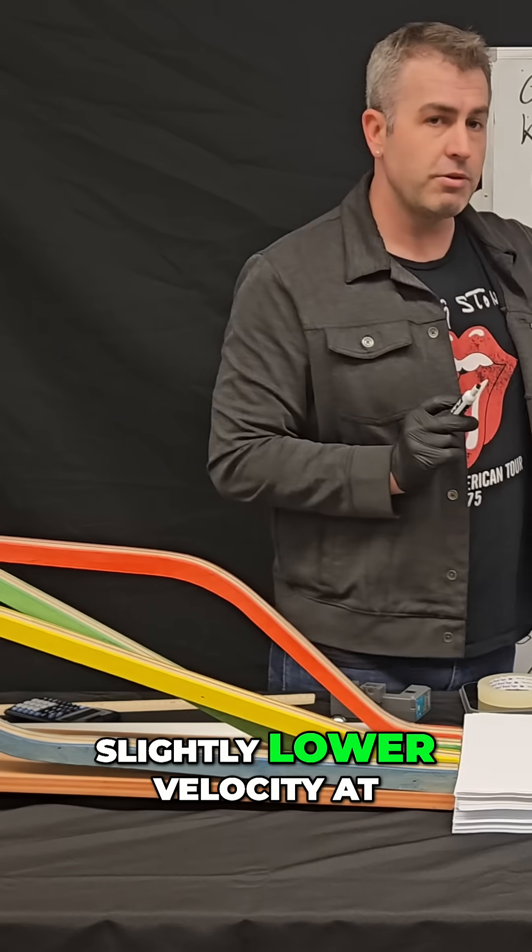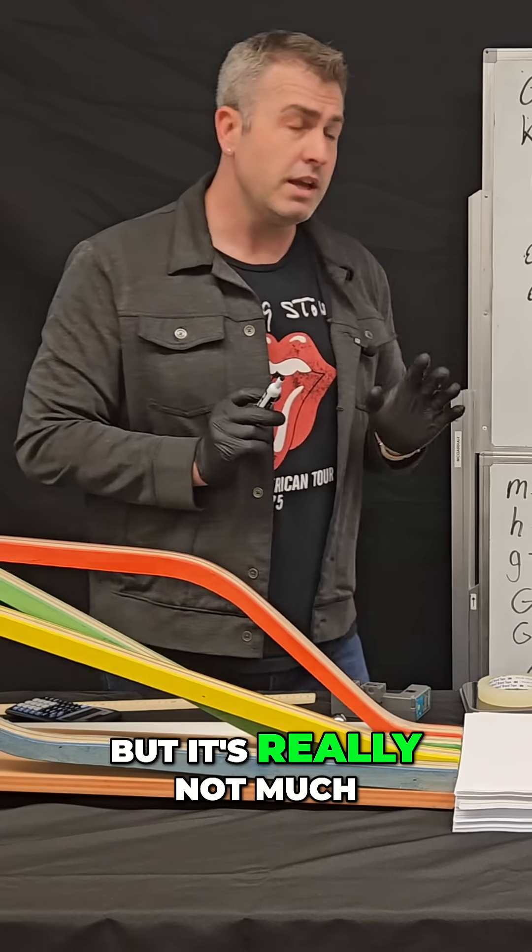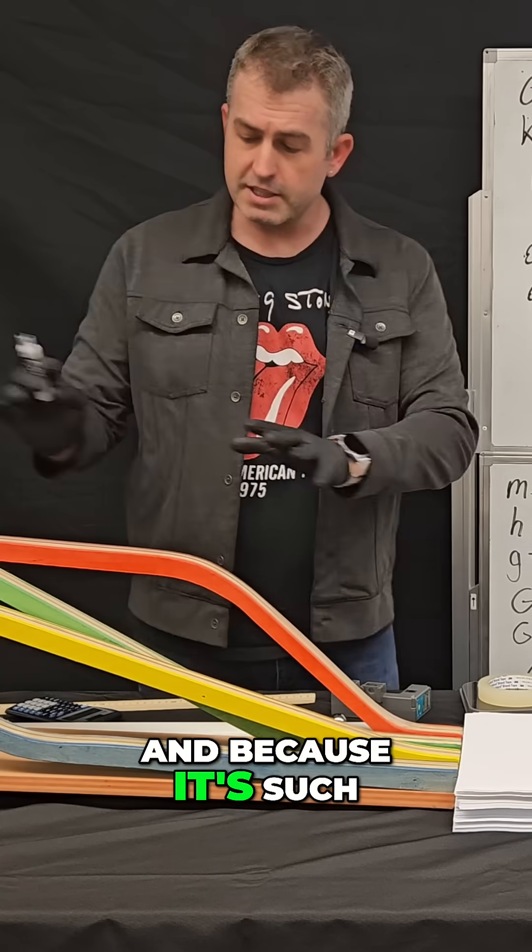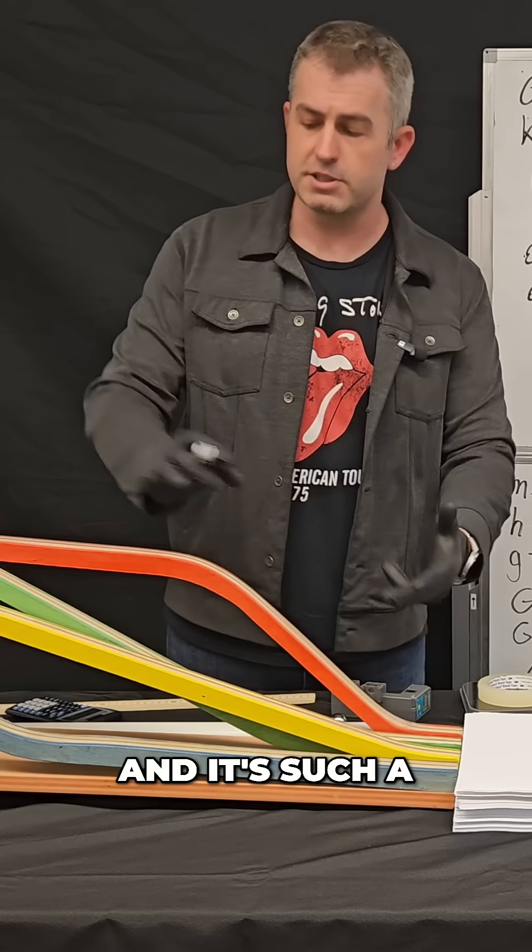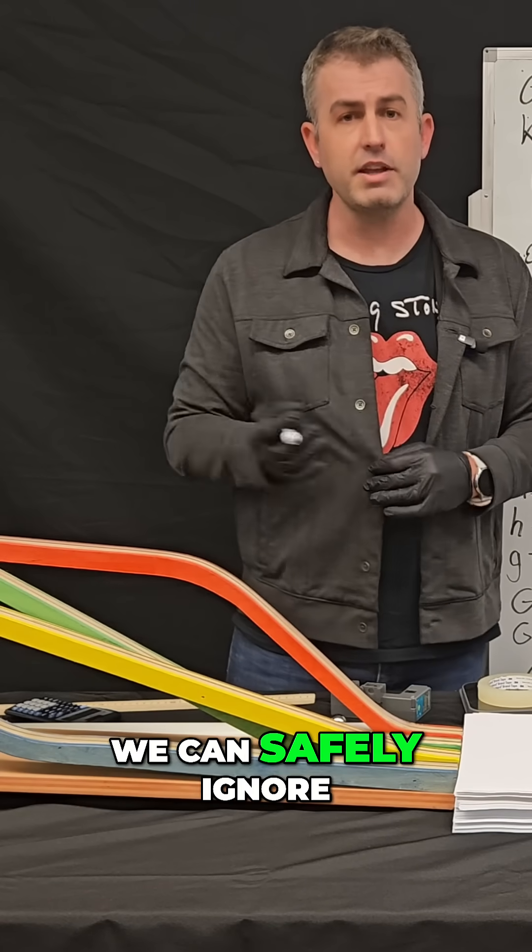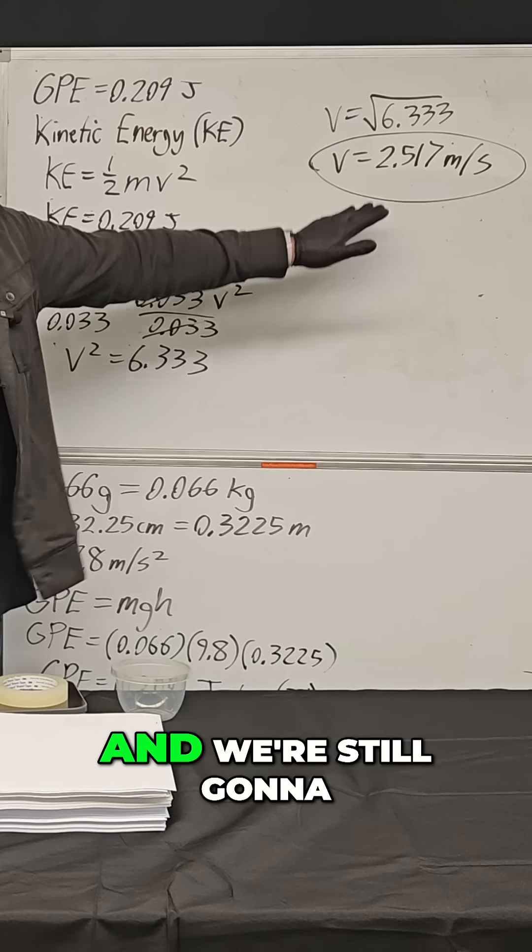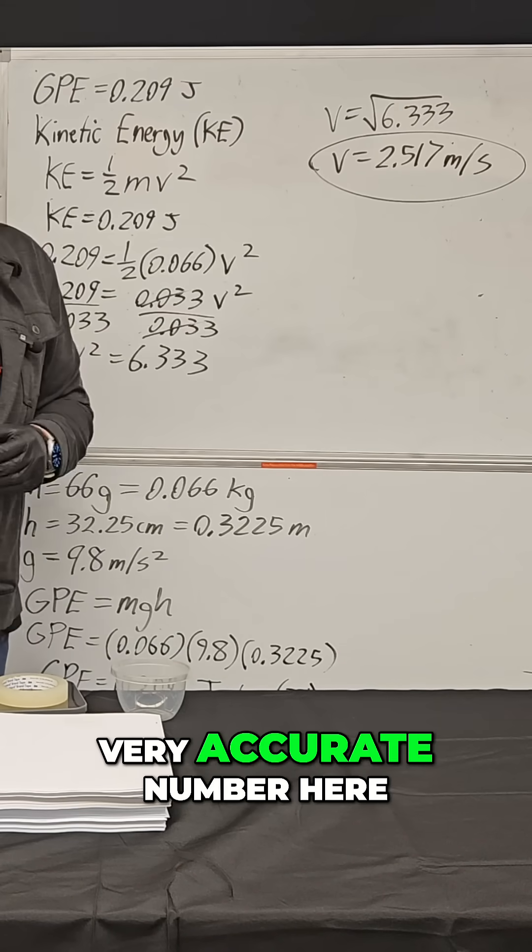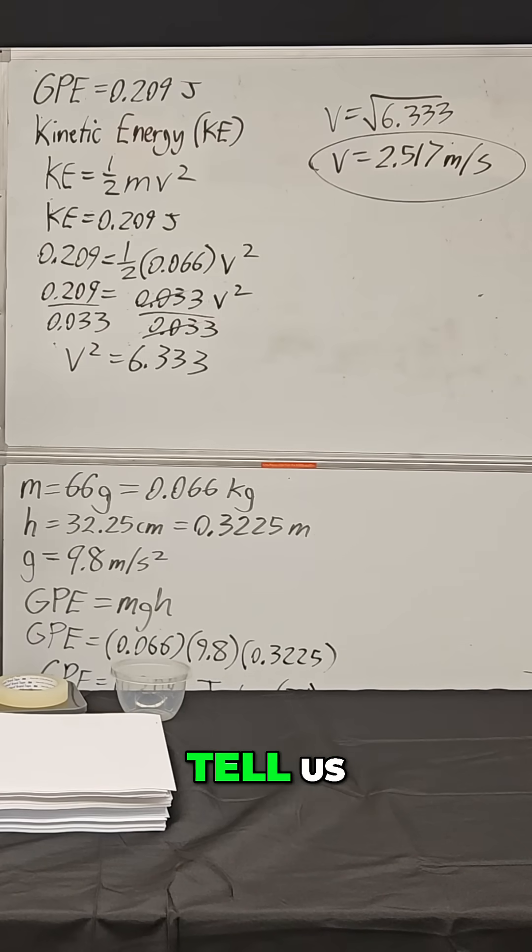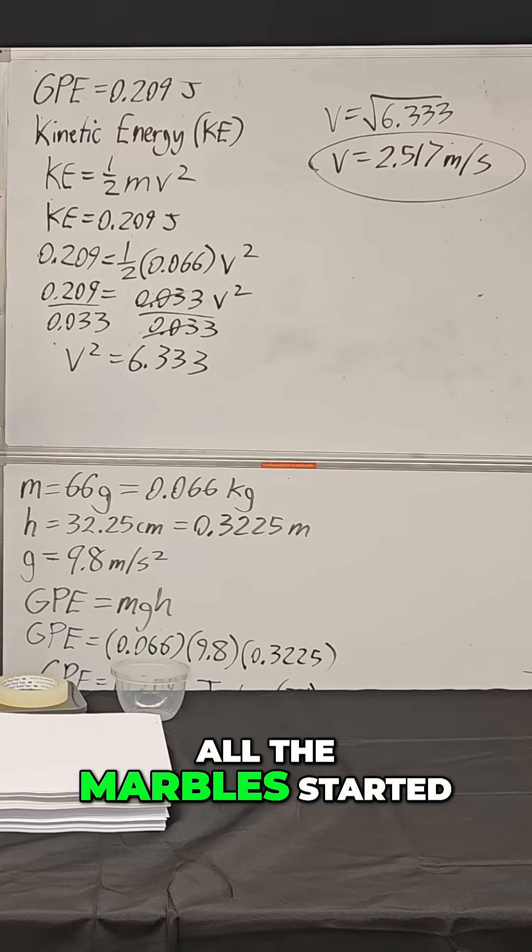This would result in a slightly lower velocity at the bottom, but it's really not much. Because it's such a low friction system and such a short distance, we can safely ignore the effects of friction and we're still going to get a very accurate number here. So what does this tell us? Well, all the marbles started with the exact same potential energy.